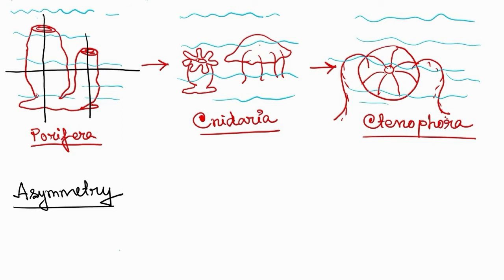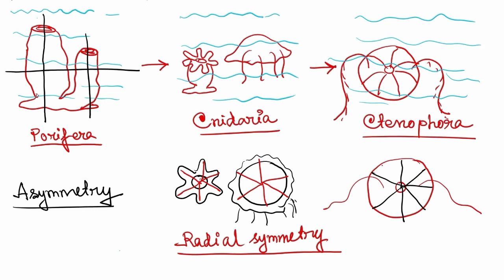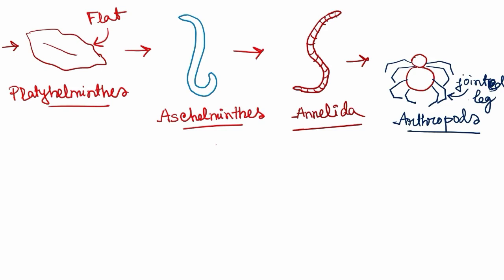In the next phylum, cnidaria, if we look at the cnidarians from the top view or from the bottom view, we can see that their body is distributed equally from the central axis. This symmetry is called radial symmetry. This is also found in the ctenophora. So both cnidaria and ctenophora have radial symmetry.